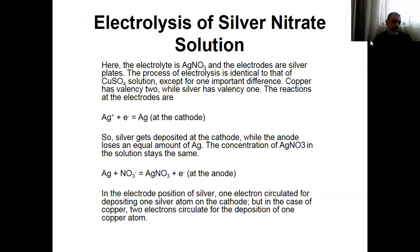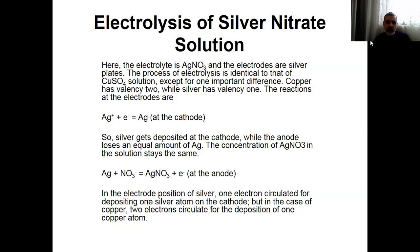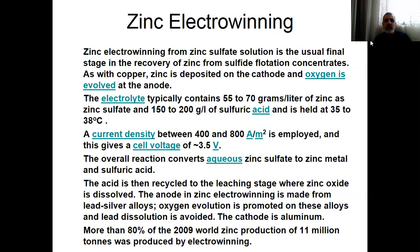Furthermore, we are going to look at — not today but next week or other weeks — the electrolysis of aluminum. In aluminum, three electrons are involved, and the mass of aluminum is much less than that of silver and copper. This is the reason production of aluminum is very costly. Let's look at the electrowinning of zinc.